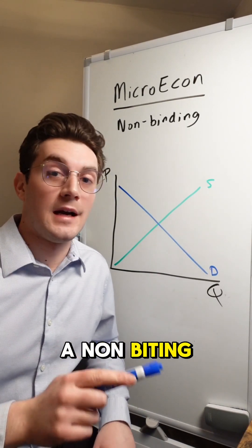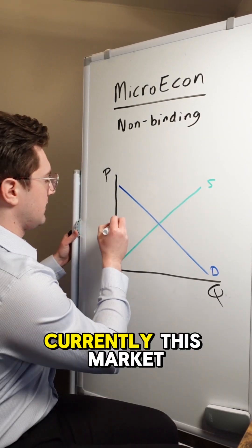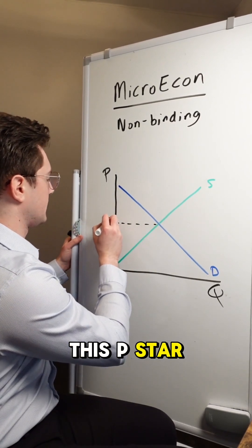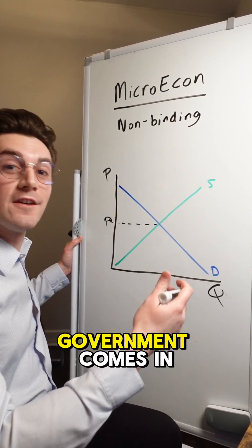All right, let's flip this around now and do a non-binding price ceiling. Remember, currently, this market is operating at this P star equilibrium price.